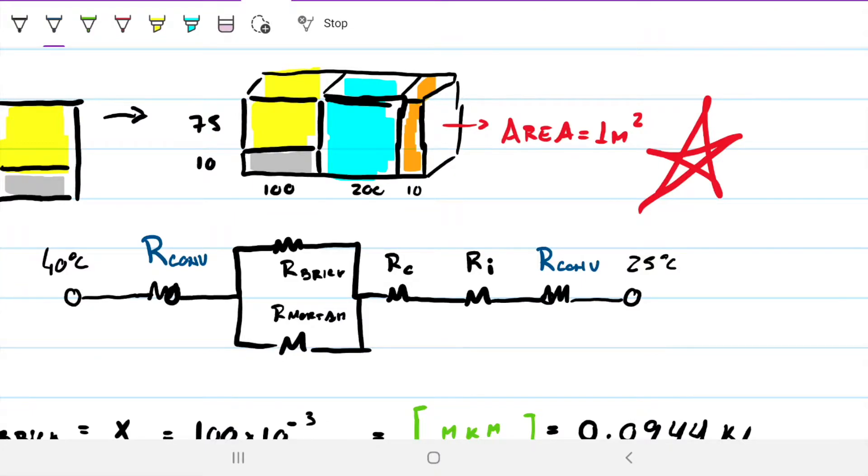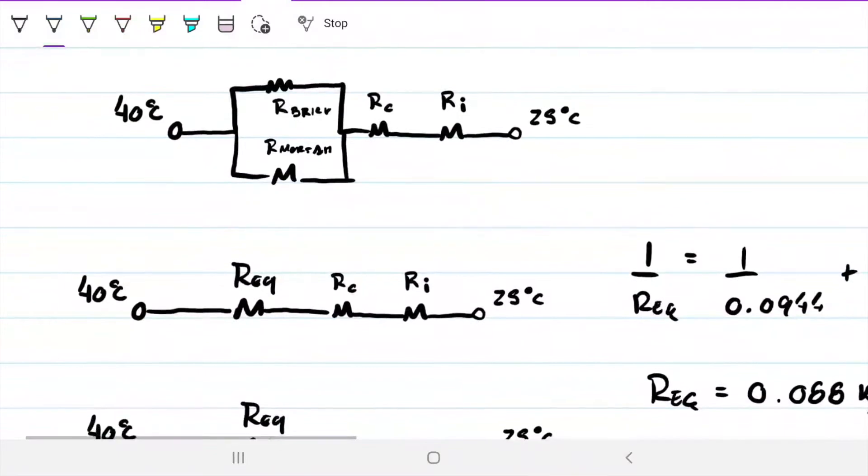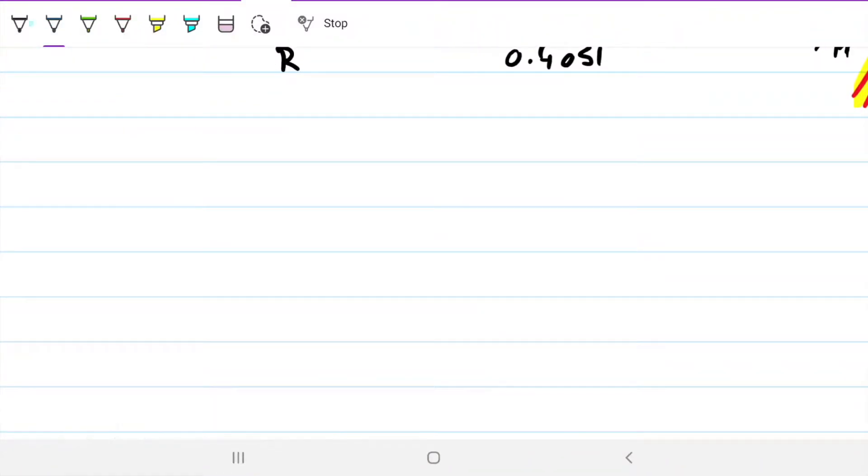So we're going to have two new resistances to sum up with what we were doing before. Everything else is exactly the same. What will change is that now we're going to have to sum two additional resistances, that's all. So just like before, we're going to calculate these resistances and then account for them.